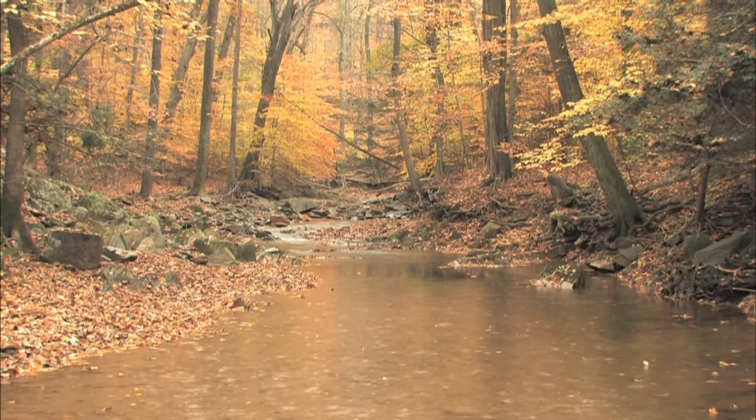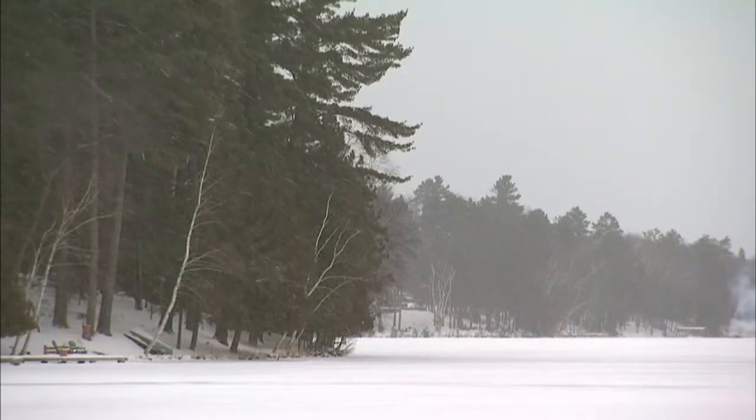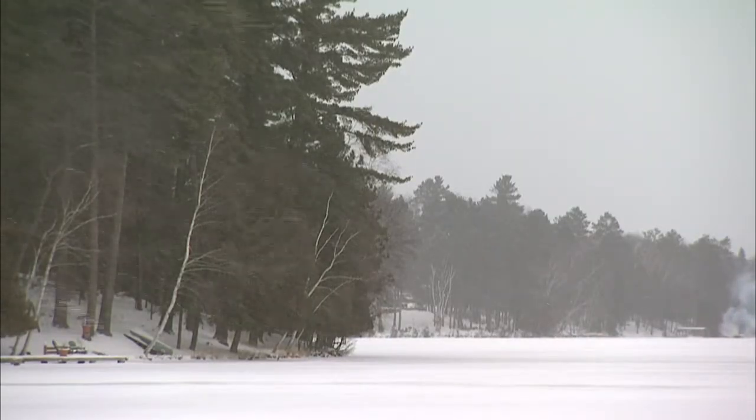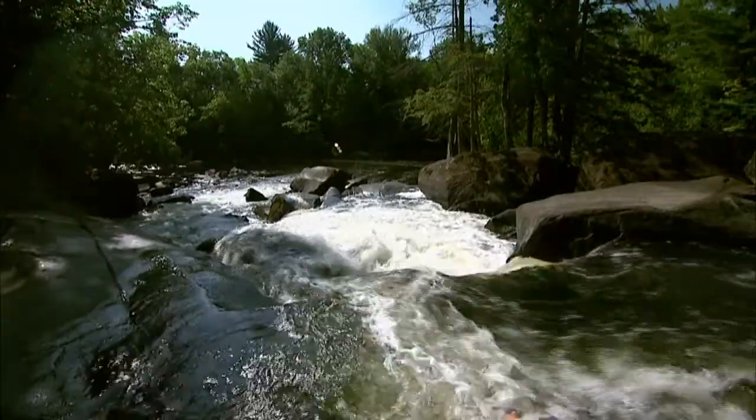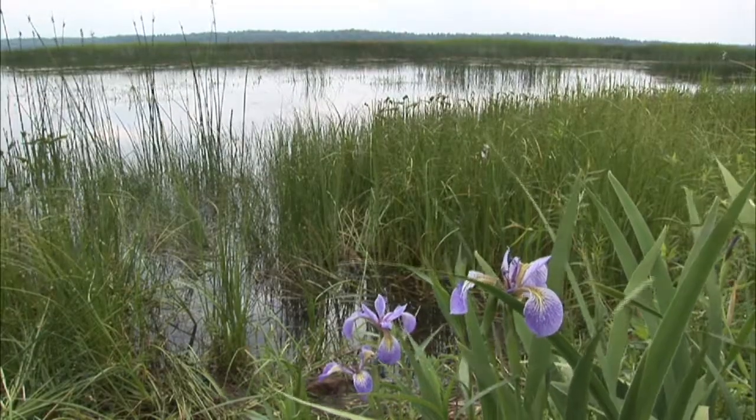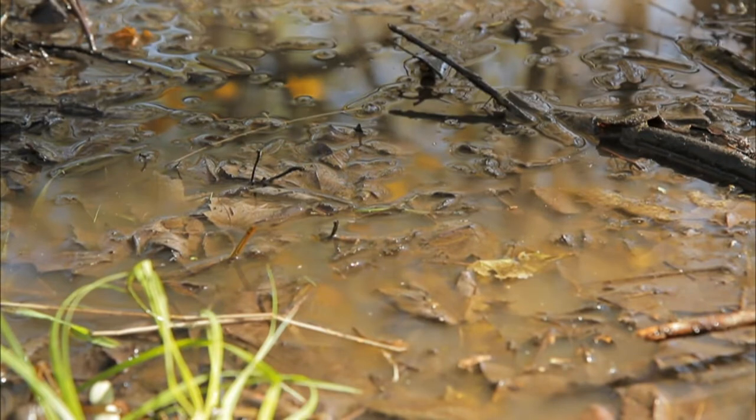The water that falls as precipitation takes many paths on its way back to evaporation. The water may flow into a nearby stream or lake, be taken up by plant roots, or infiltrate the soil and turn into groundwater.